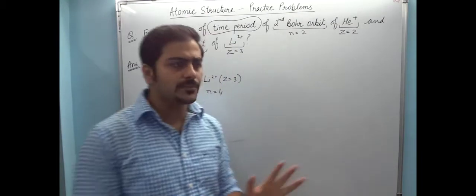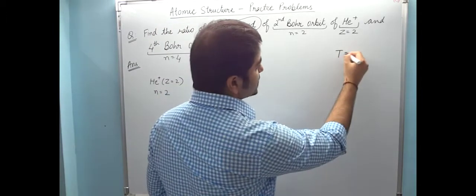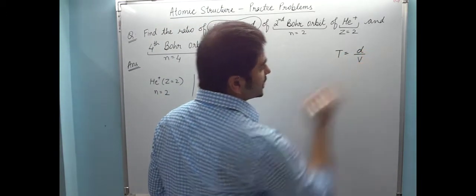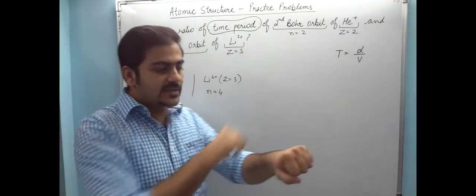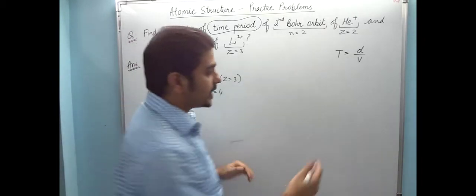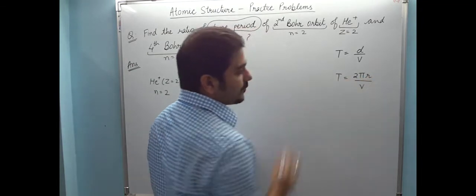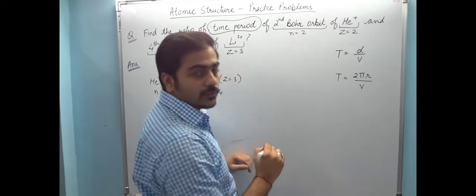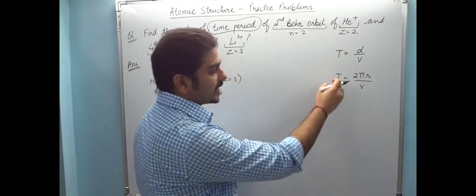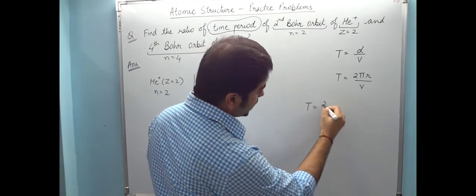Simple: time is distance by velocity. From physics, time is distance by velocity. The distance that the electron is traveling is the circumference, that is 2πr. Time period is 2πr by v. Now radius formula and velocity formula we can add.